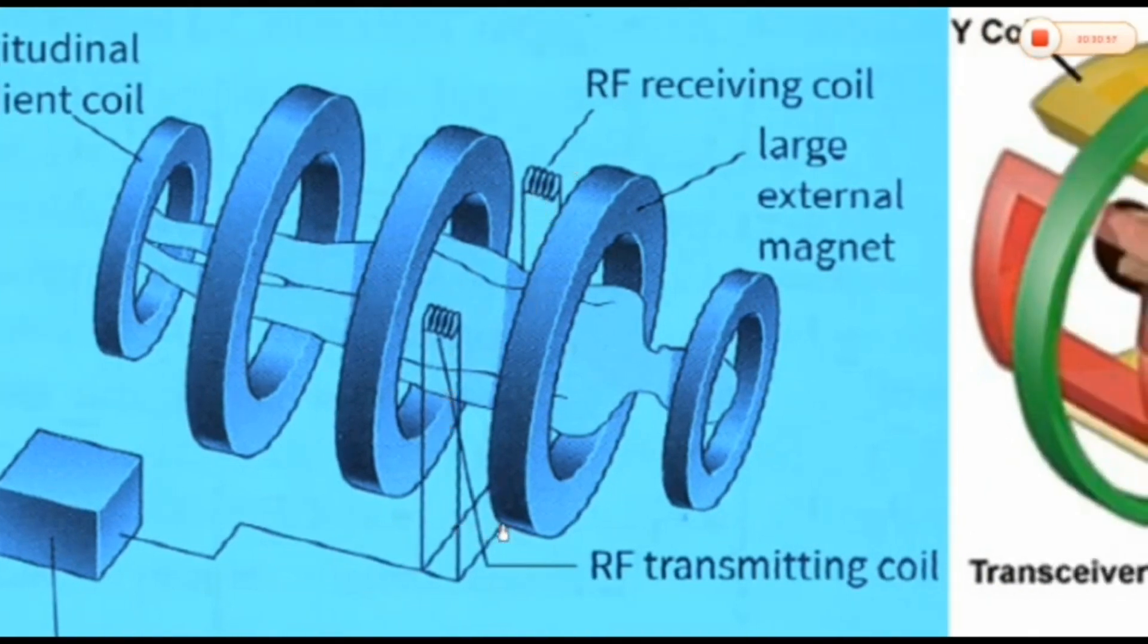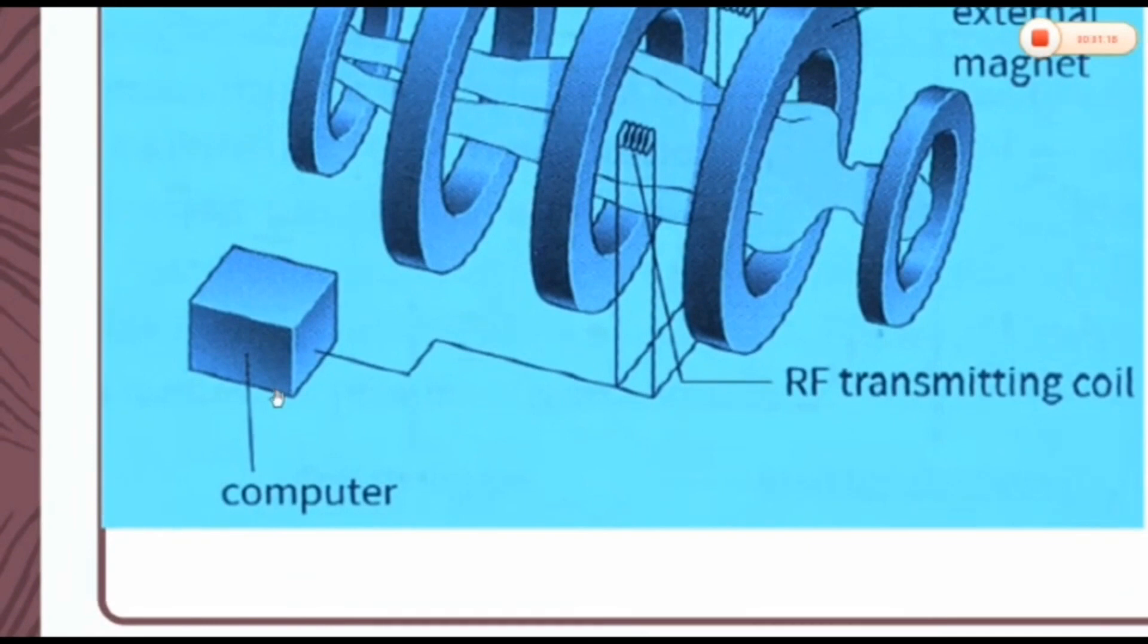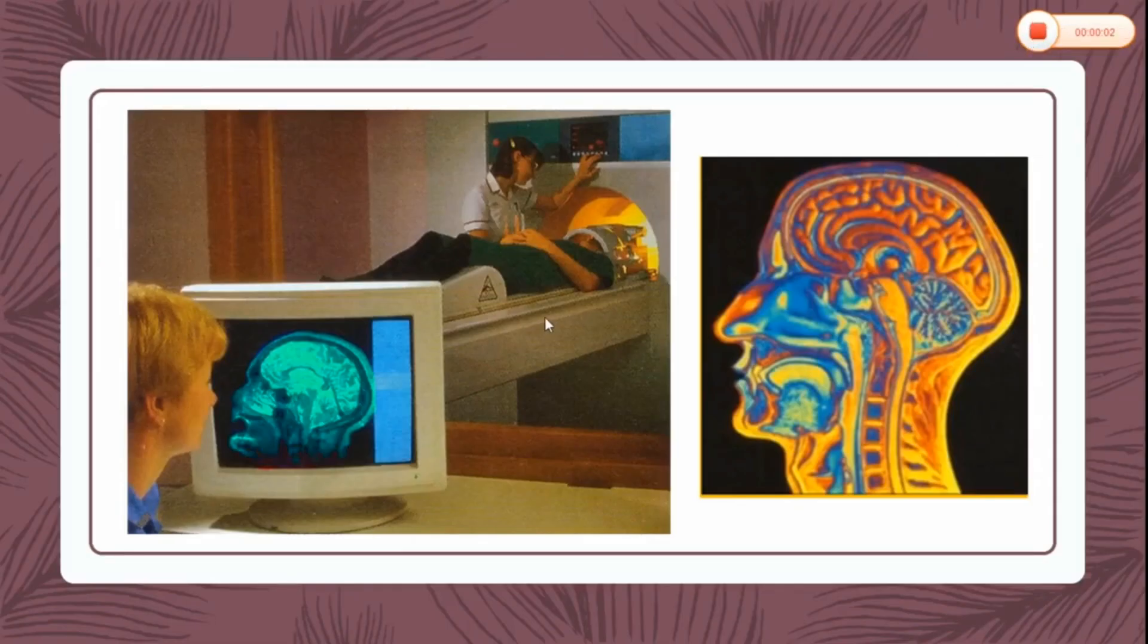These are the RF receiving and RF transmitting coils. Note that these RF signals are non-ionizing radiations. The RF transmitting coil transmits RF pulses into the body. The RF receiving coil detects the signal emitted by the relaxing protons. The computer controls the gradient coils and RF pulses, stores and analyzes the received data, and produces and displays images. In our next lesson, we will study procedure and working of an MRI scanner, and later we will also study its advantages and disadvantages and compare a CT scan with an MRI scan.